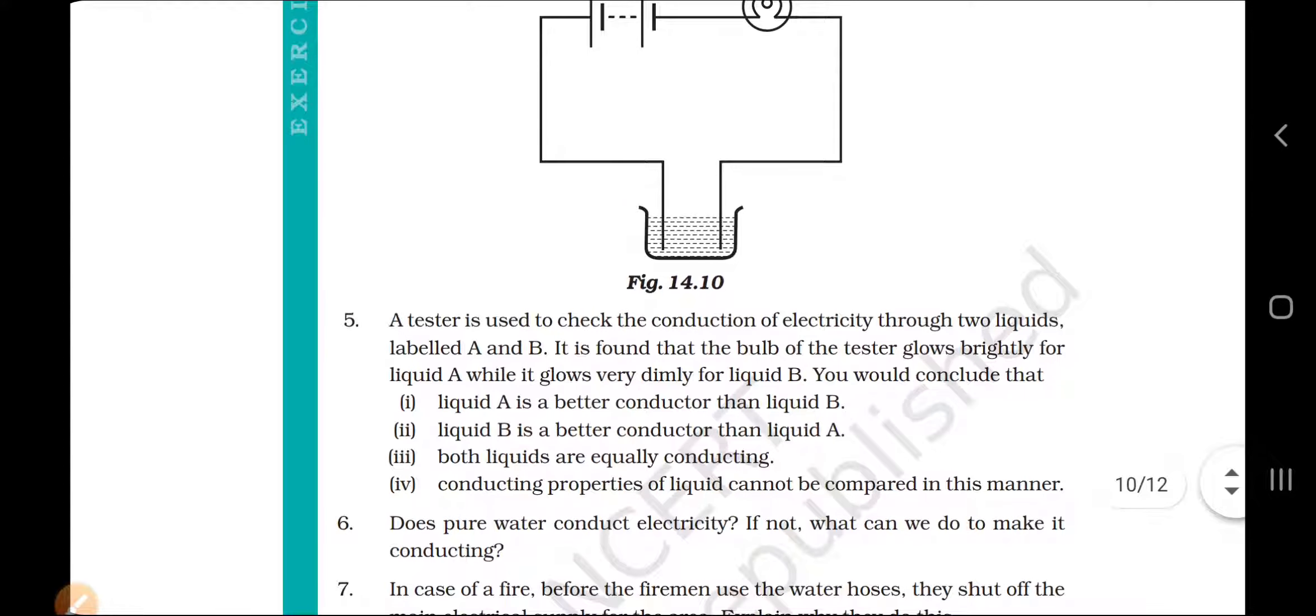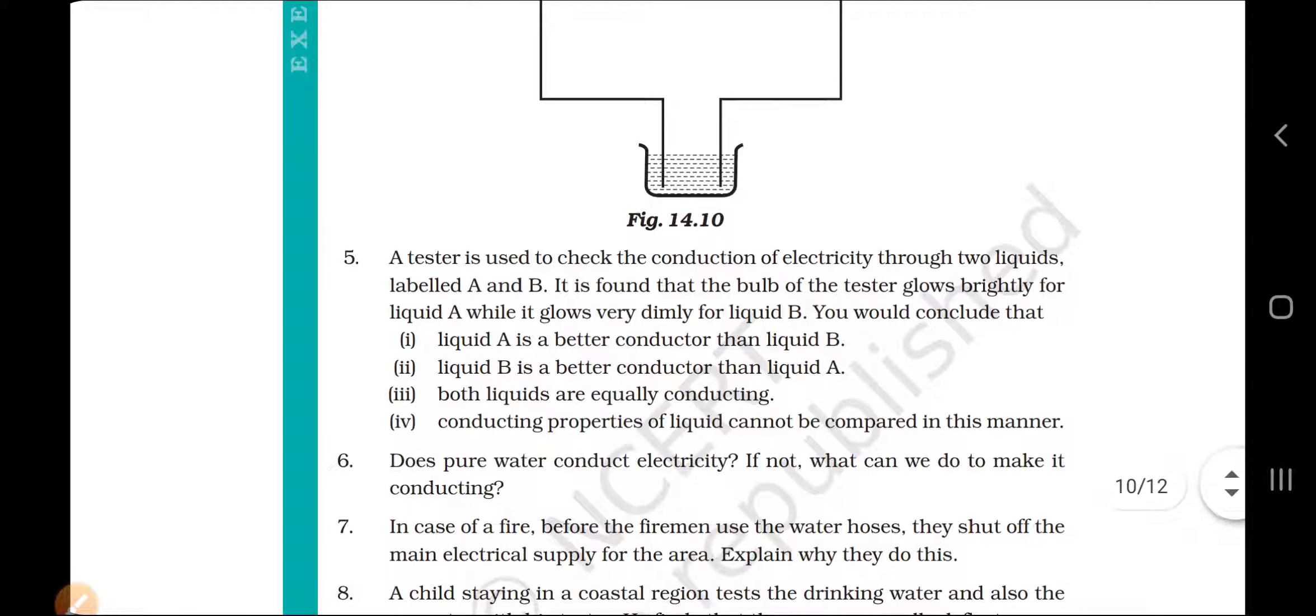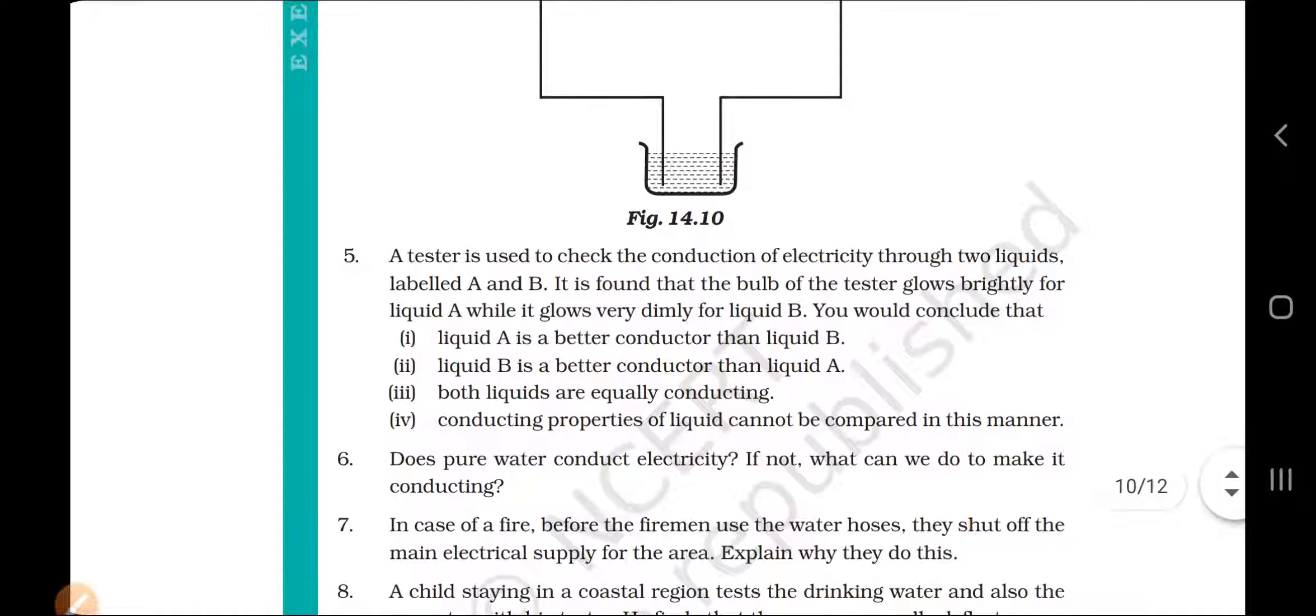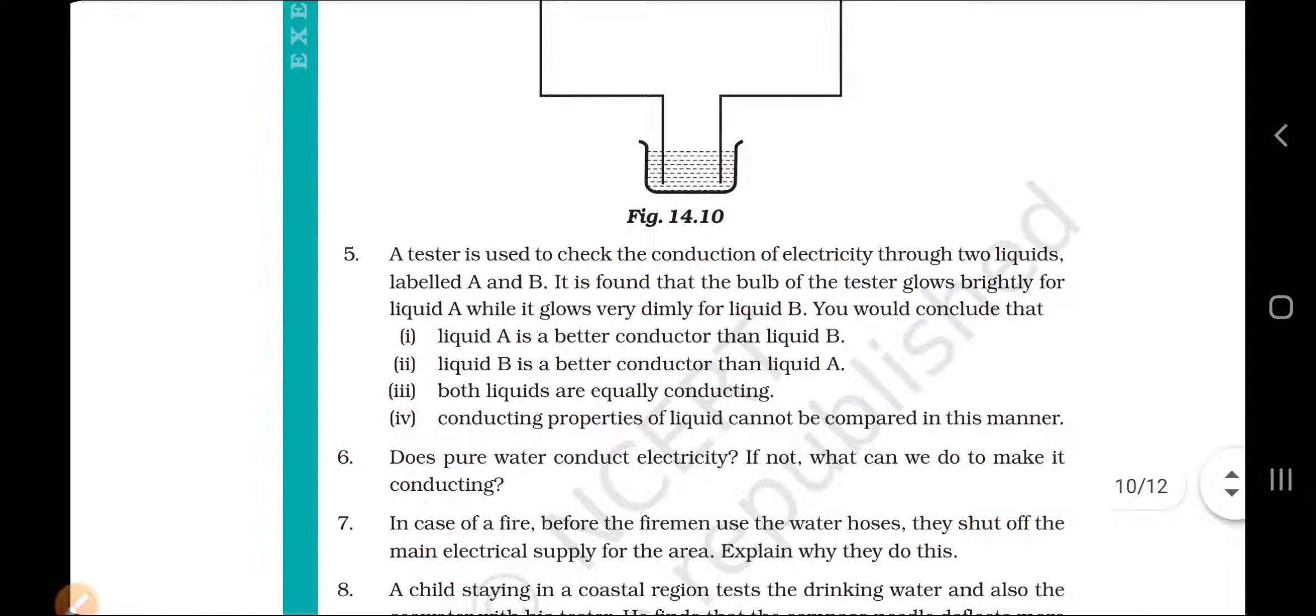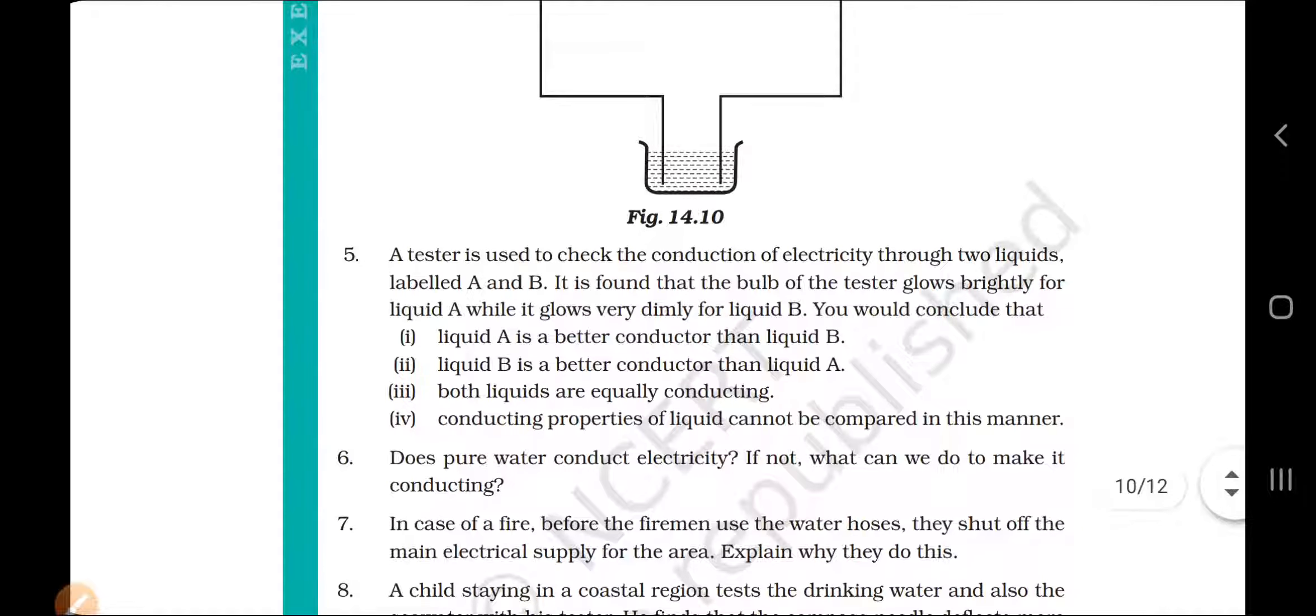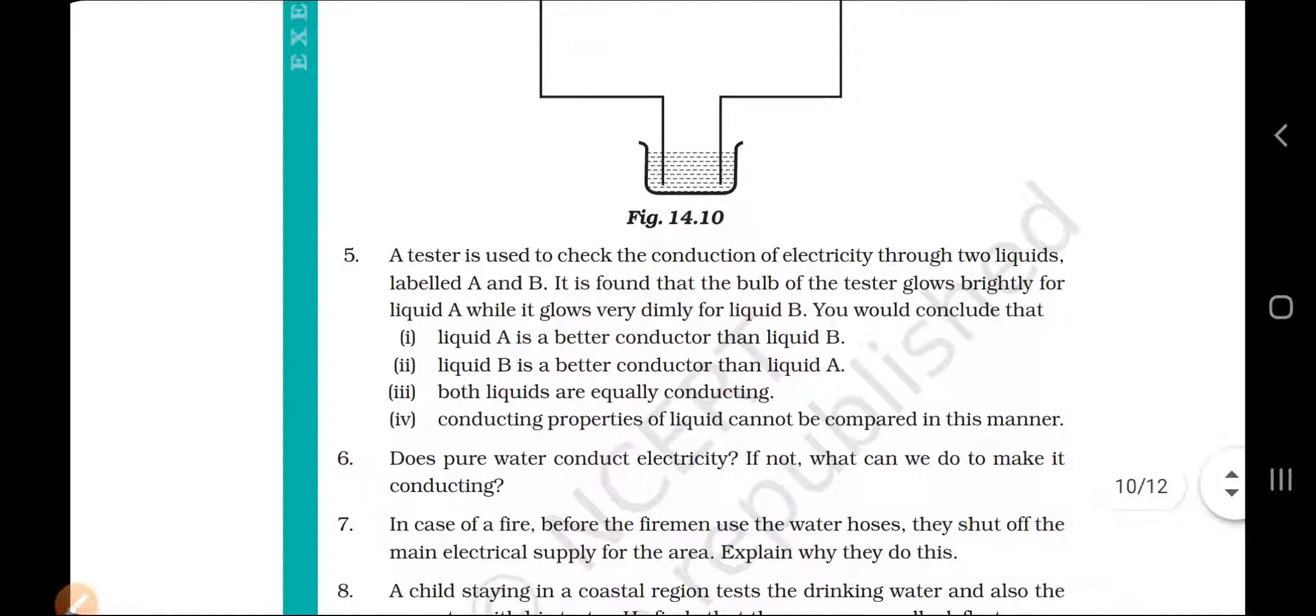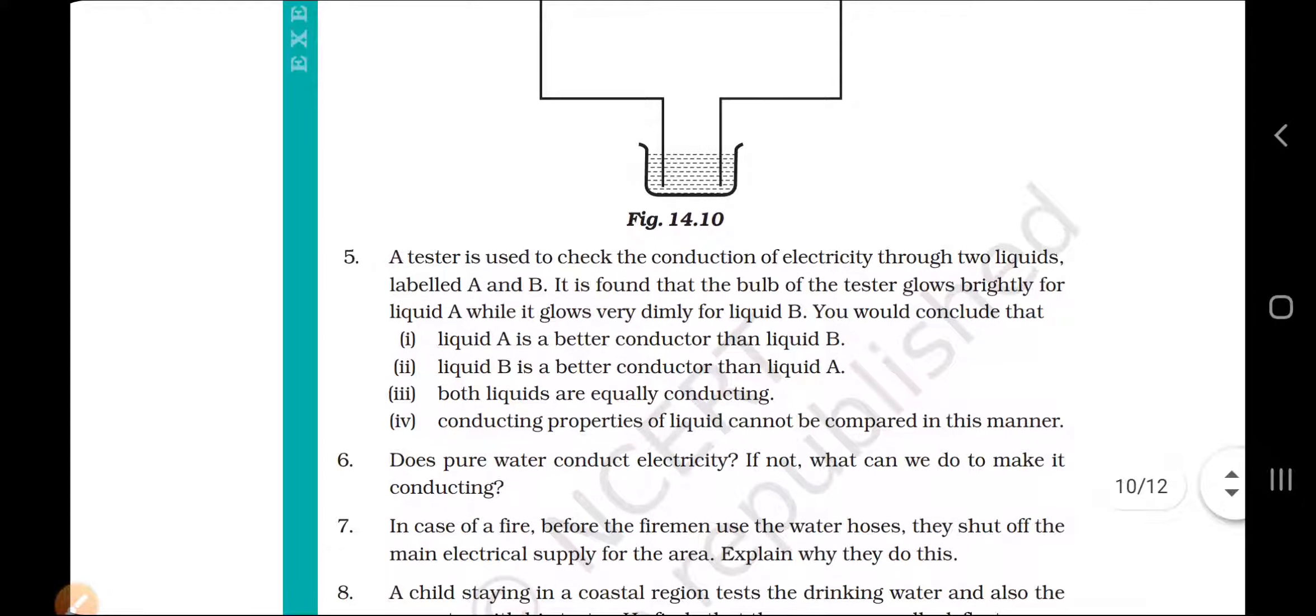Question 5. A tester is used to check the conduction of electricity through liquids A and B. It is found that the bulb of the tester glows brightly for liquid A and for liquid B it is glowing very dimly. So what will you conclude? Liquid A is a better conductor than liquid B. Obviously, liquid A is a better conductor than liquid B and that's why the bulb is glowing brightly.